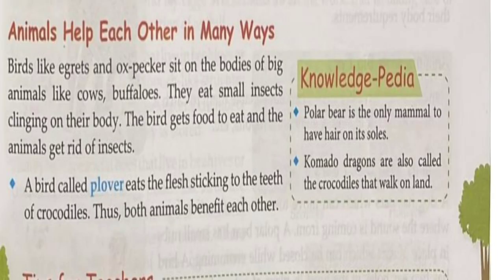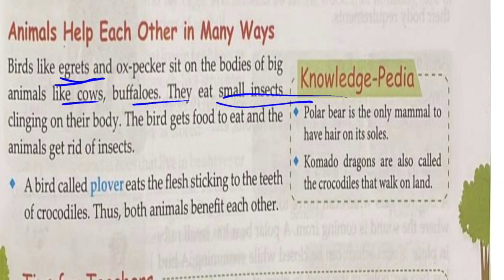Animals help each other in many ways. Birds like egrets and oxpeckers sit on the bodies of big animals like cows and buffalo, eating insects from their skin — the bird gets food to eat and the animal gets rid of insects. A bird called the plover eats flesh stuck to the teeth of crocodiles.